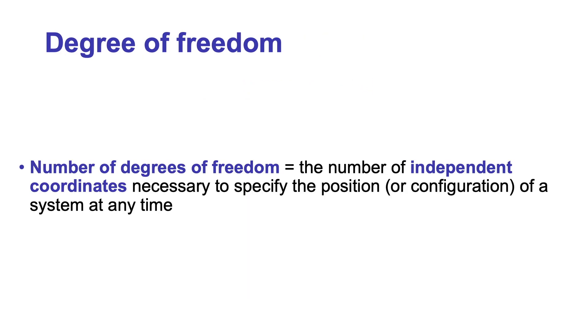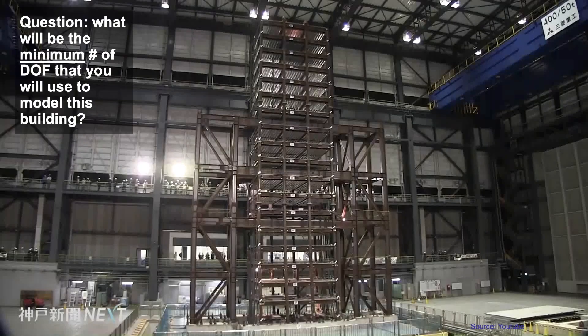More generally, for the purpose of this module, we will define the number of degrees of freedom of a system as the number of independent parameters necessary to specify its configuration at any given time. We are used, in structural engineering, to use coordinates as degrees of freedom. One question we are usually confronted with is the question of the minimum number of degrees of freedom necessary to have a sufficiently accurate picture of the response of a structural system. Take a look at this video.